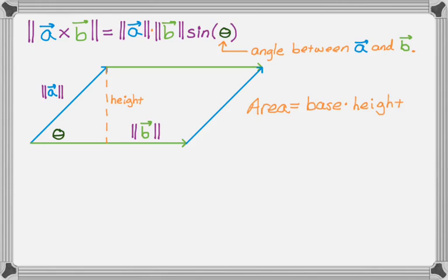And if you look at the right triangle that we just created, we have that the height over the magnitude of A is equal to the sine of theta. That's going to be important. So the base is just the magnitude of B. And then the height is, if you look at that equation we just wrote, it's actually going to be the magnitude of A times the sine of theta.